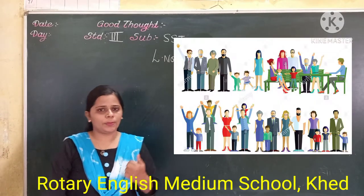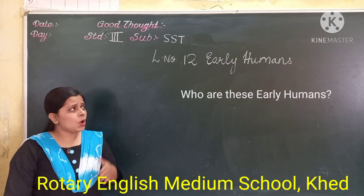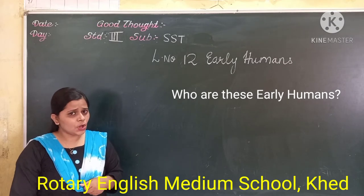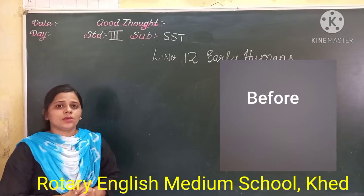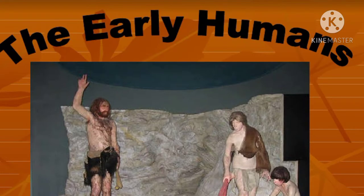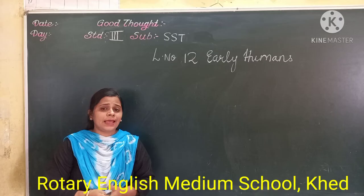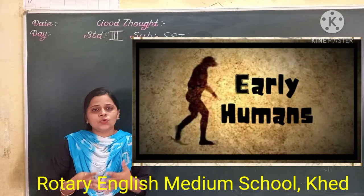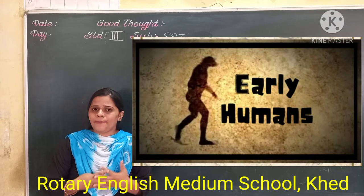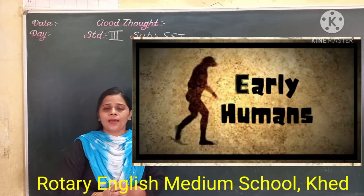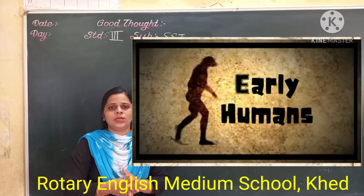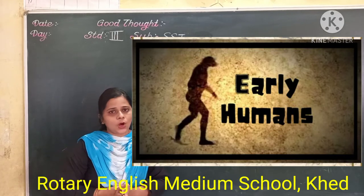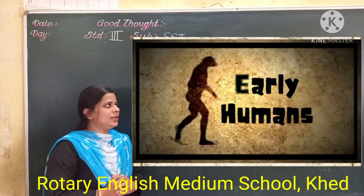You all know who human beings are. But who are these early humans? Early means before. I will tell you the story of early humans. In this lesson, we are going to see how these early humans used to live in the earlier days - what type of food they ate, what type of dress they wore, and how slowly and gradually they changed their way of life. This old story we are going to learn in this lesson. So now let's start - early humans.